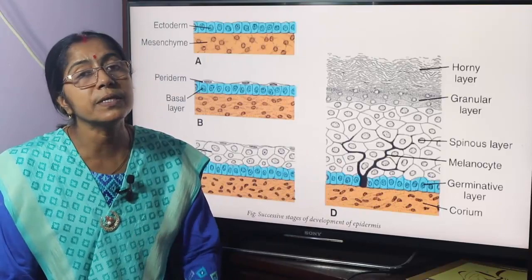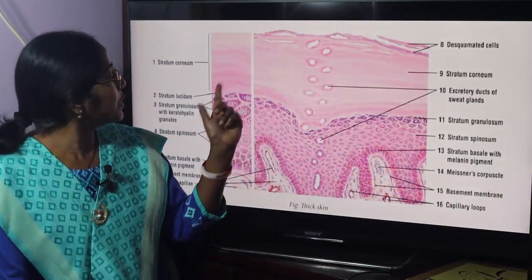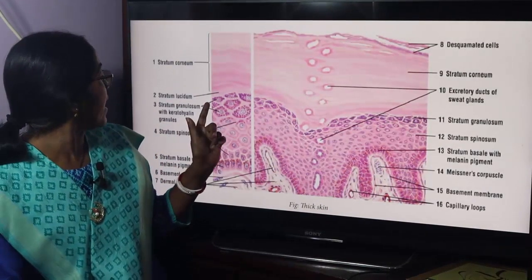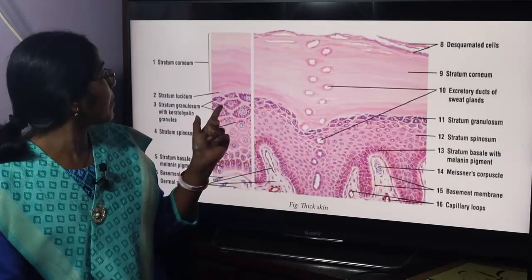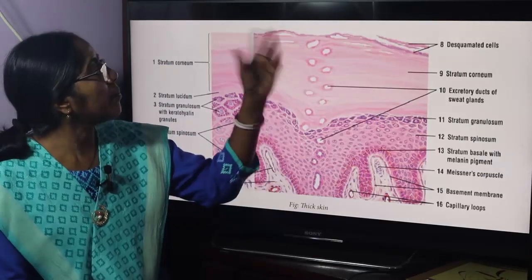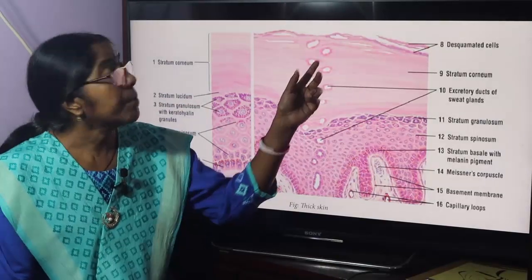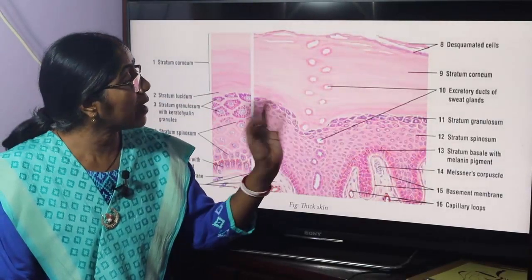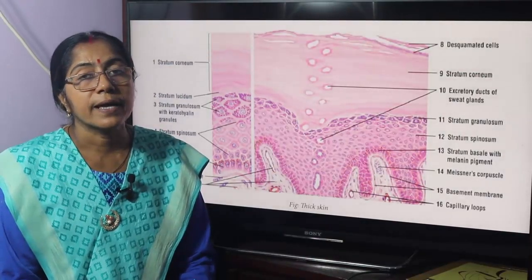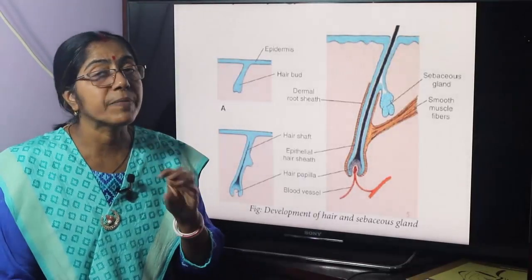In thick skin, the epidermis consists of five layers from deep to superficial: the germinal or basal layer, the spinous layer, the stratum granulosum or granular layer, then the stratum lucidum, and finally the stratum corneum. The dermis lies beneath the epidermis and also contains sweat glands.